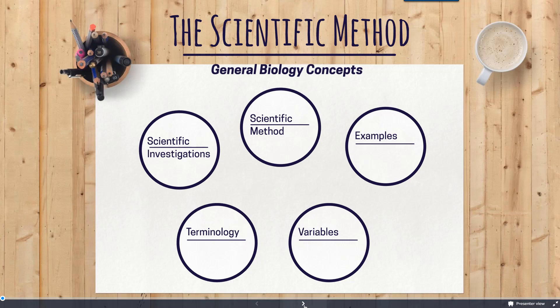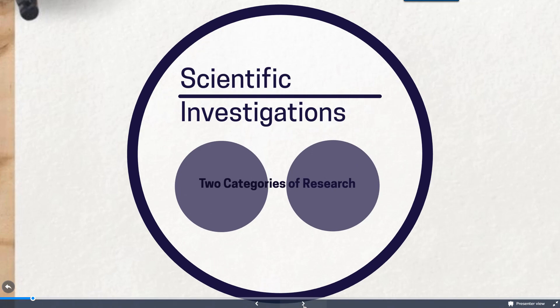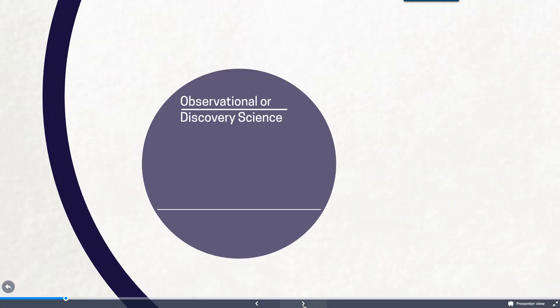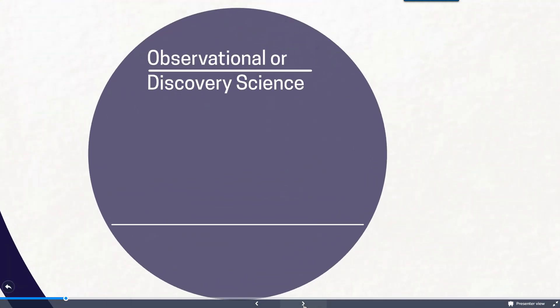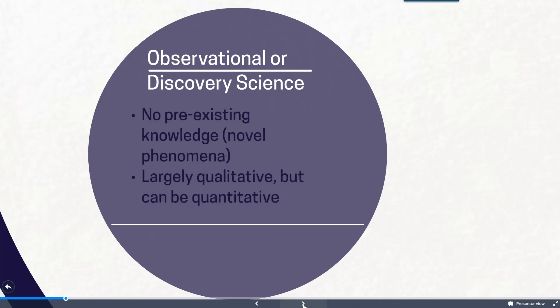So we first start off by looking at two forms of scientific investigations or categories of research. The first category is termed observational or discovery science, and in this category of research typically there's no pre-existing knowledge regarding something that's being observed and it's a novel phenomenon. And it's largely going to consist of qualitative data that's collected regarding this subject matter, but it can also be quantitative in nature.